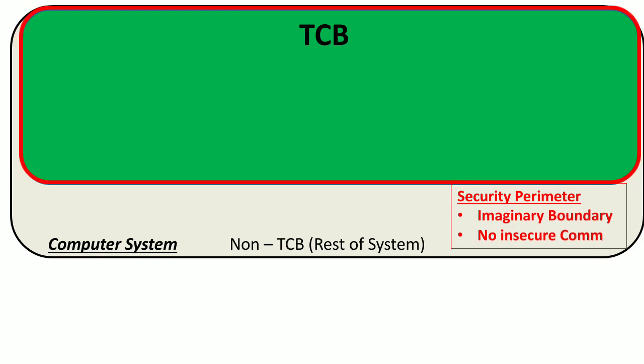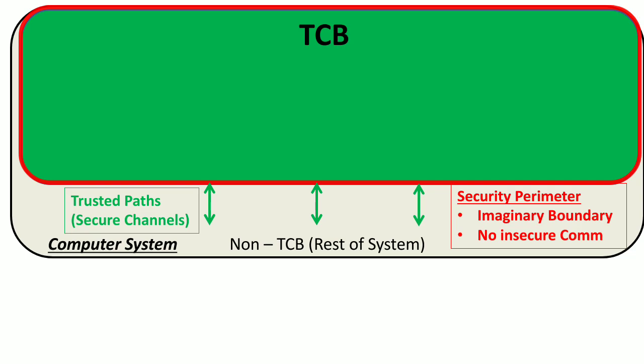The security perimeter is an imaginary boundary around this TCB which prevents any insecure communication between TCB components and non-TCB components. Access between TCB components and non-TCB components is allowed only using the Trusted Paths, which are basically secure channels of communication between the TCB components and non-TCB components.